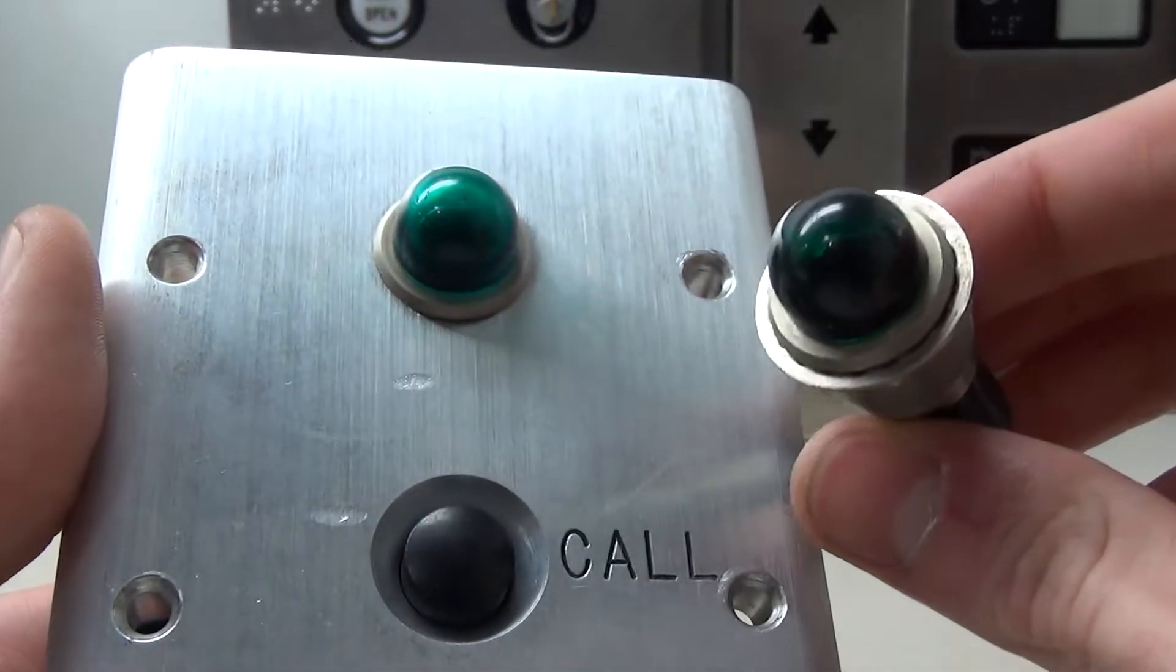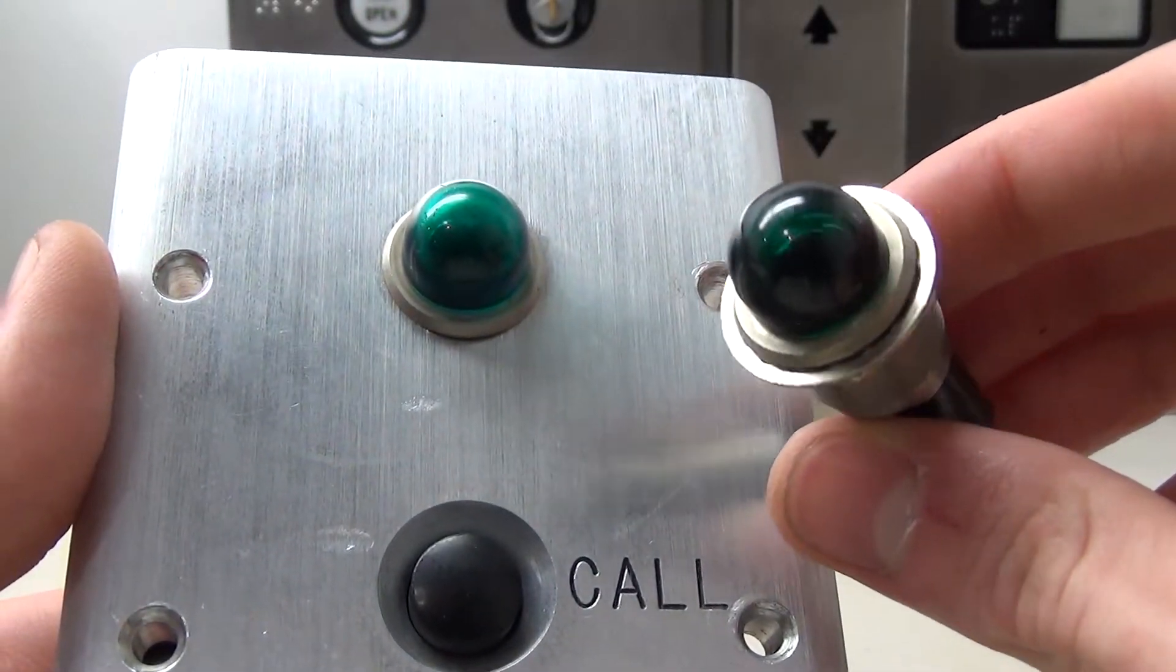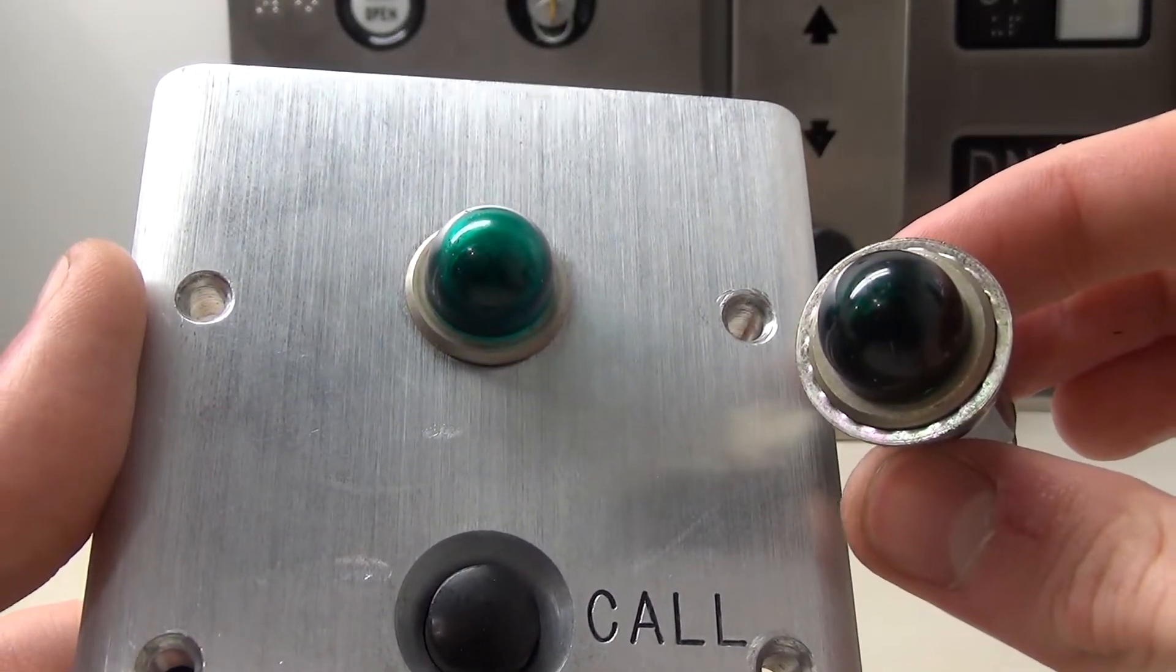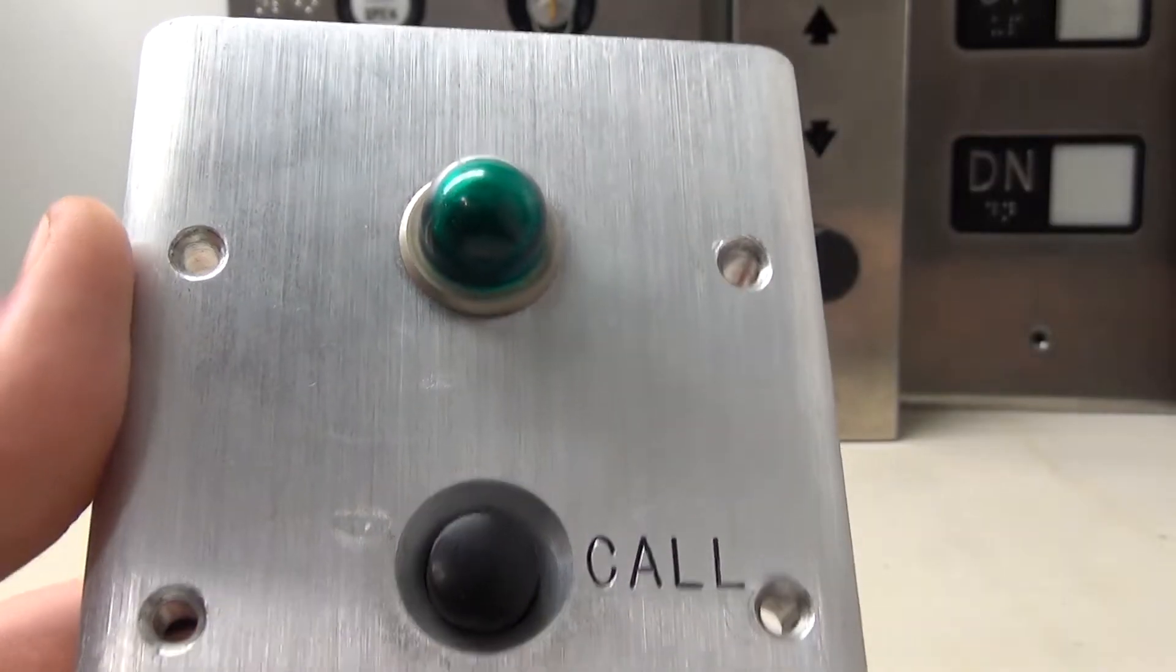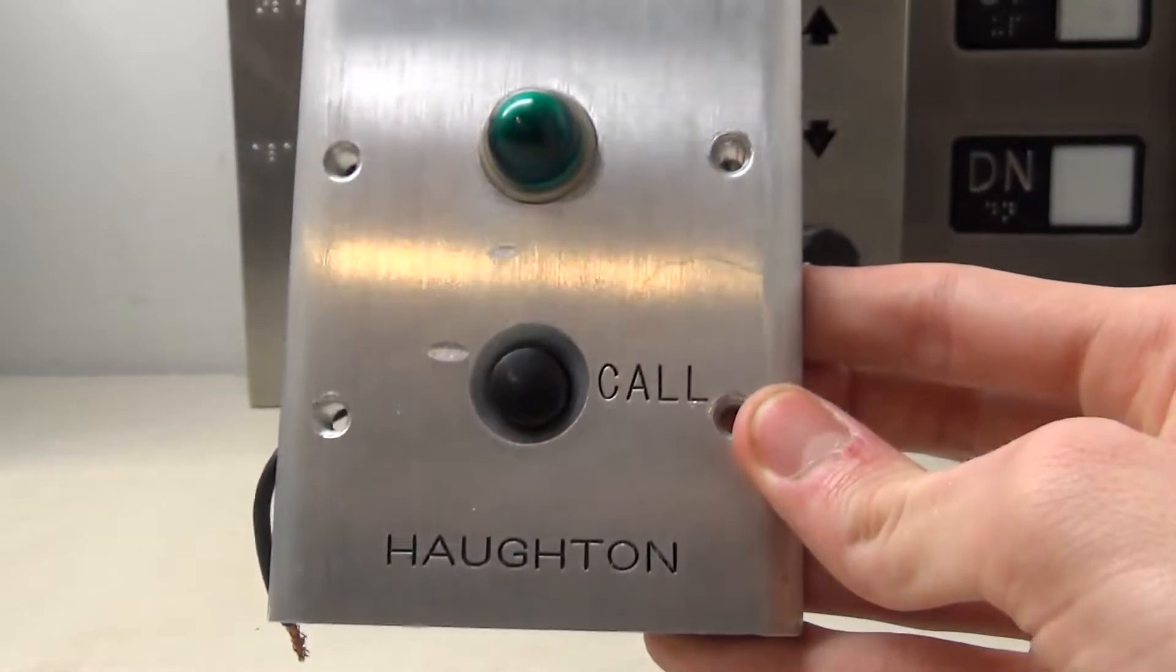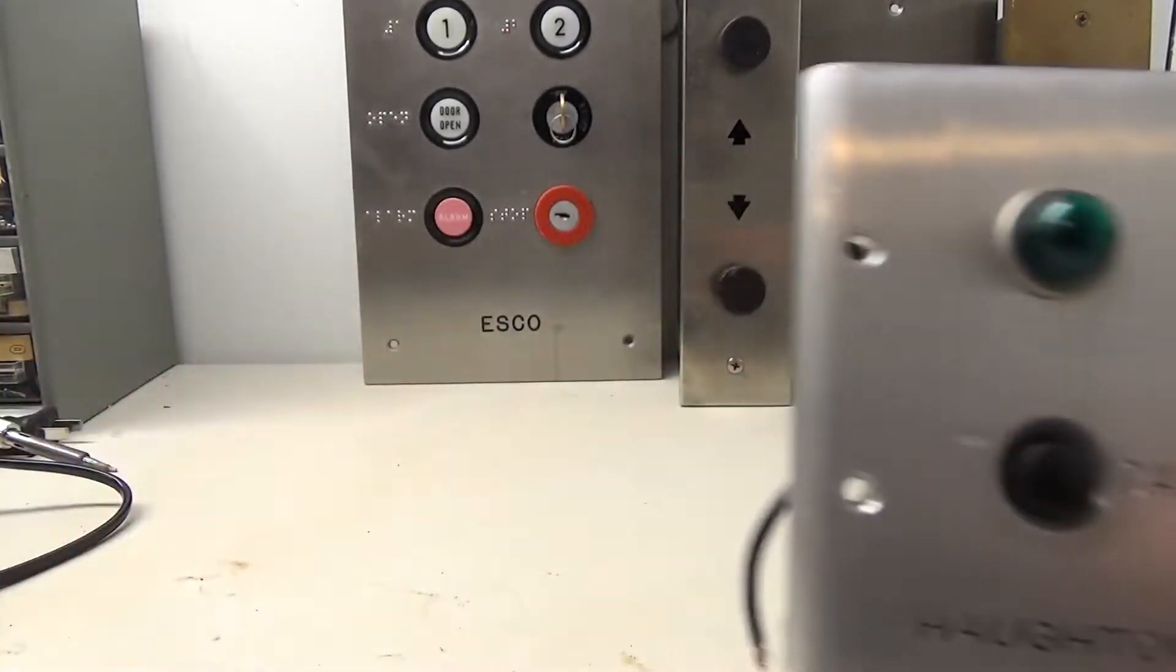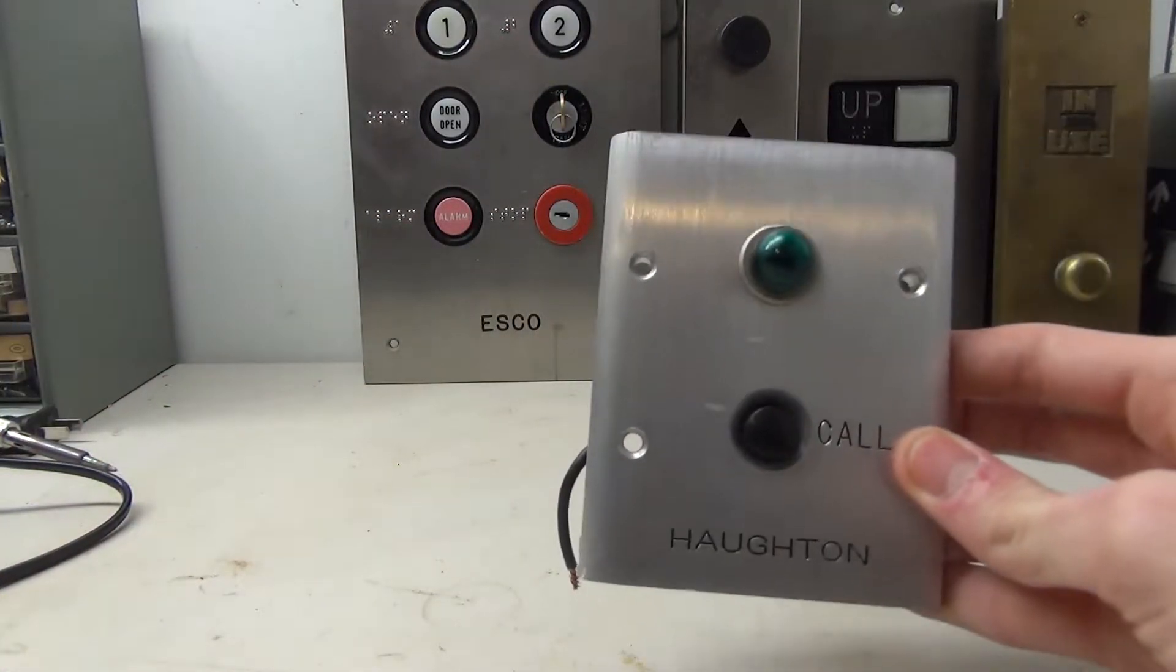These lenses were used in a lot of different things such as cars. Don't you see them on locomotives too? Yeah, actually on some of our older locomotives, and those were used in buses. It's just a standard indicator light. And what's interesting is this is a Houghton call station, yet it's using all third-party parts.